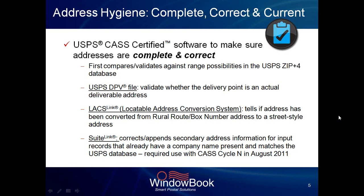For instance, if your input address is 123 Main Street, the first step compares it and says: I have a valid range of addresses — 100 through 200 Main Street — so I have a valid address. Moving into the next step, you bump that address against the Postal Service DPV file, which validates whether that delivery point is an actual deliverable address. It goes right down to 123 Main Street and asks: is this deliverable or not?